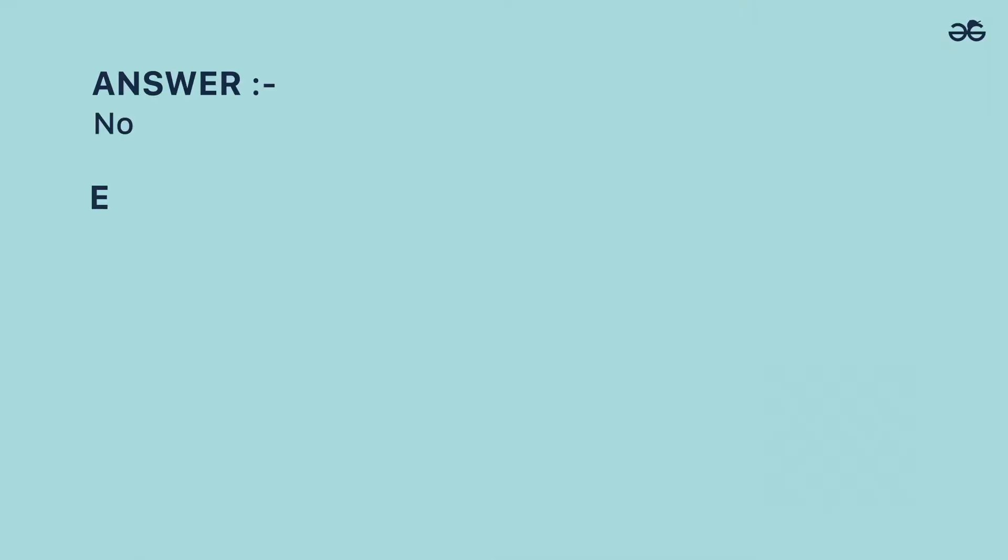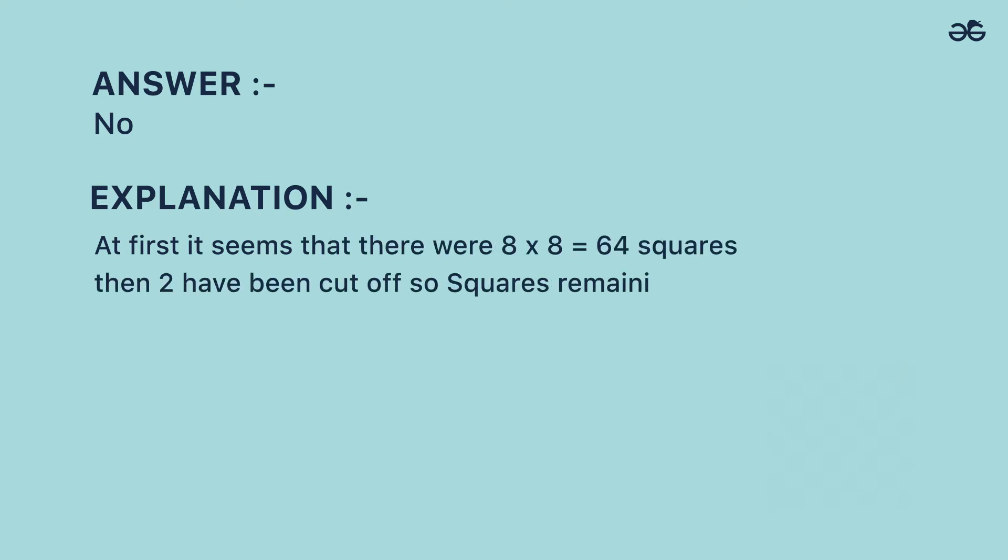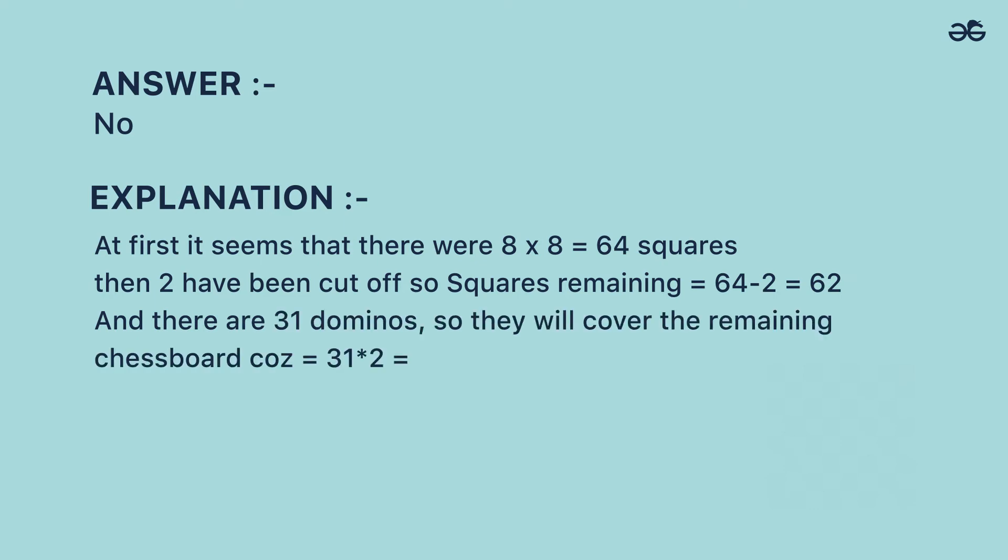Answer: No. Explanation: At first it seems that there were 8x8, which is equal to 64 squares. Then two have been cut off, so squares remaining: 64 minus 2 is equal to 62.